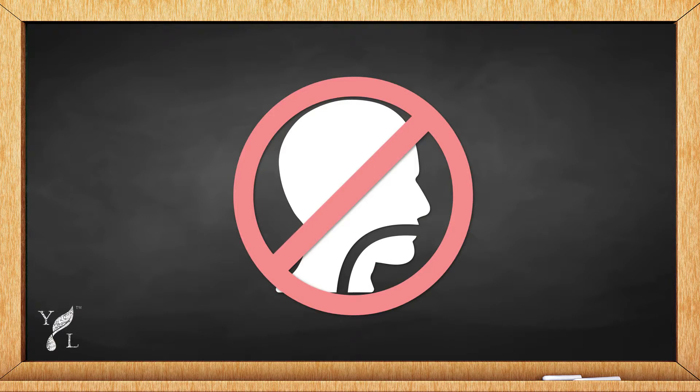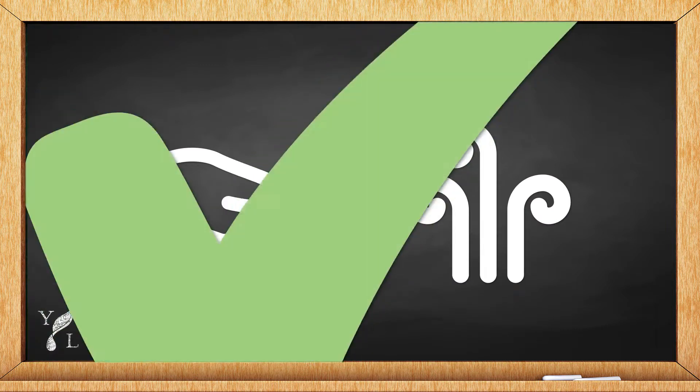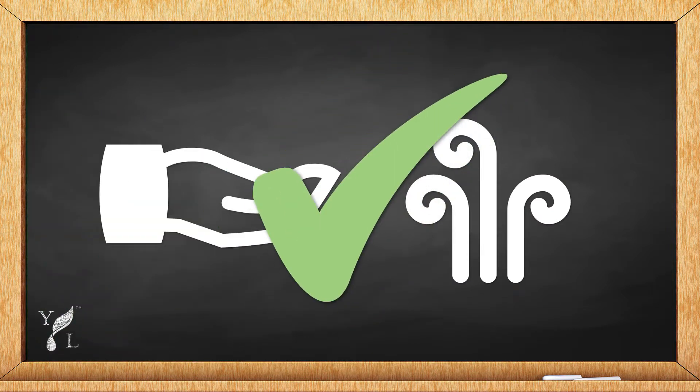However, the solvent that is left behind evaporates very quickly, so jasmine and neroli are perfectly safe for topical application and inhalation. We at Young Living are committed to using the best possible extraction method for each essential oil that we offer. Our proprietary seed to seal process is designed to preserve as much of the botanical's precious chemical profile as possible.